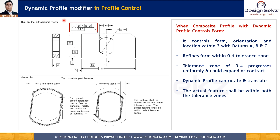The sixth modifying symbol is dynamic profile, shown as a triangle after the tolerance value in the feature control frame. It generally refines the profile control using composite or multi-segment controls, and helps restrict rotation, translation, or purely the form of the surface element. In this example, the triangle besides 0.4 refines form only, while the 2 mm tolerance zone in the composite control governs size, form, orientation, and location with respect to datum A, B, and C.